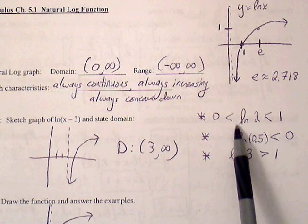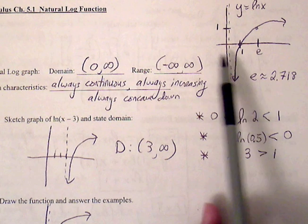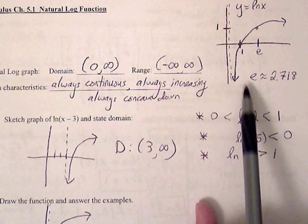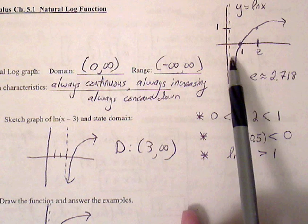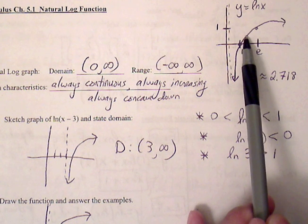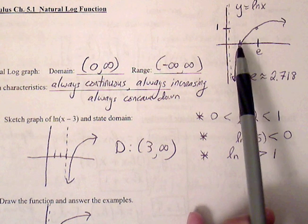For instance, natural log of 2. We know natural log of 2, this x value of 2, means that it has to sit on the graph somewhere between 1 and E.